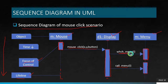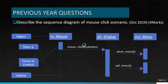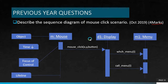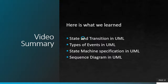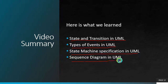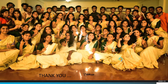These are nothing but the events, and that's all about the sequence diagram. In the previous year question, we have: 'Describe the sequence diagram of mouse click scenario' — worth four marks — which is exactly the case we dealt with in the previous slide. In summary, we learned about state and transition in UML, types of events in UML, state machine specification in UML, and sequence diagram in UML. Thanks for watching.